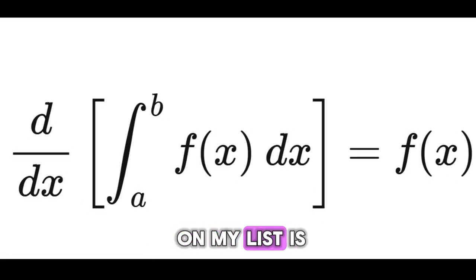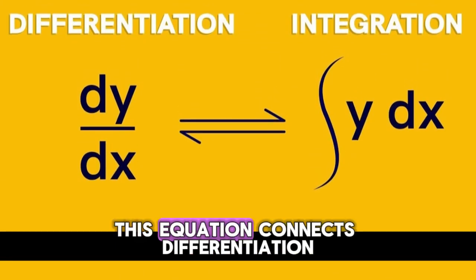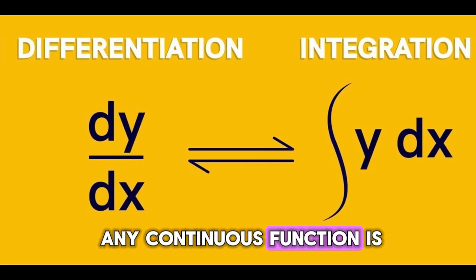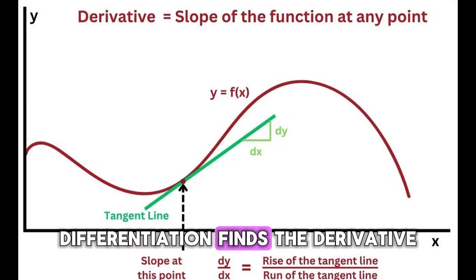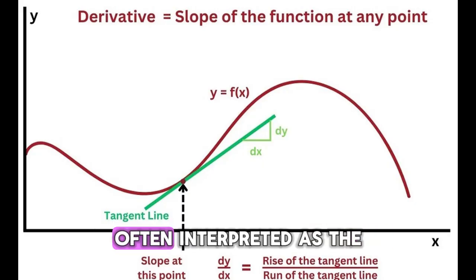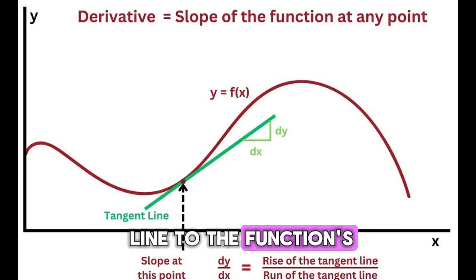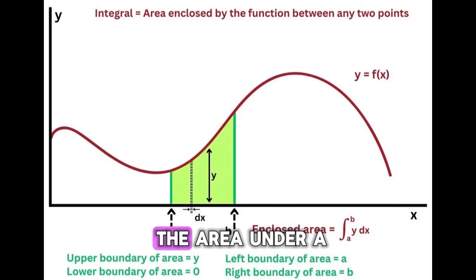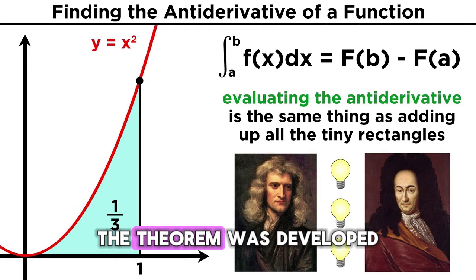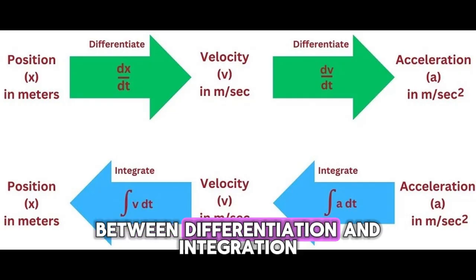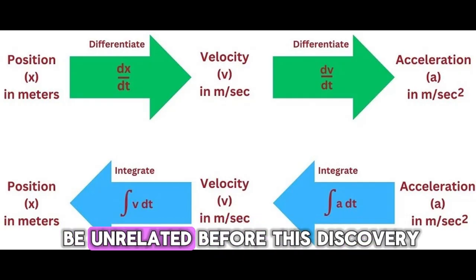And the last one on my list is the Fundamental Theorem of Calculus. This equation connects differentiation and integration, showing that the derivative of the integral of any continuous function is that original function. Differentiation finds the derivative of a function, or the instantaneous rate of change of a function with respect to its input variable, often interpreted as the slope of the tangent line to the function's graph at a specific point. Integration is the process of finding the integral of a function, or the area under a curve of that function. The theorem was developed independently by Isaac Newton and Gottfried Wilhelm Leibniz in the 17th century. Its beauty lies in the surprising inverse relationship between differentiation and integration, which were thought to be unrelated before this discovery.